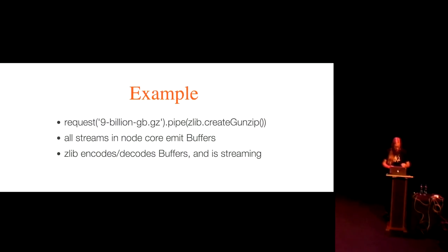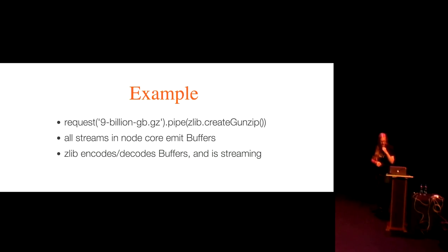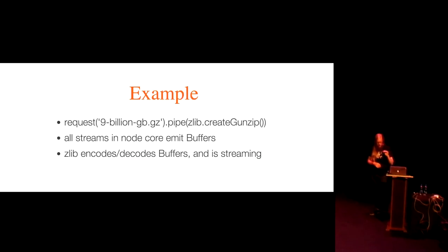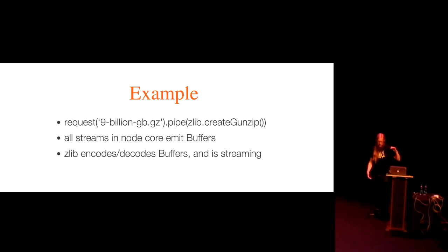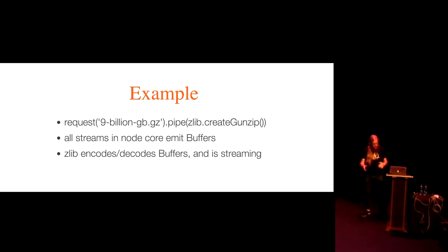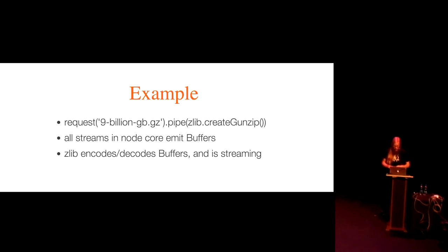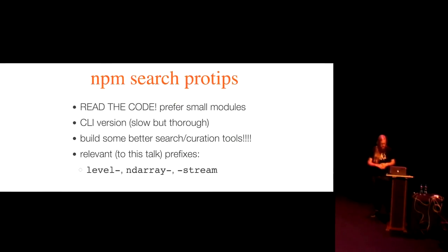If you request a nine billion gigabyte gzipped file and pipe it into Node's zlib library — which is in Node core — you create a gunzip stream. Node will start giving you data right away. As soon as data arrives, it will gunzip the first bit. Gzip is designed to be a streaming protocol. Zlib also works with buffers and tries not to convert to string because that's slow — it un-gzips as fast as possible by not converting between buffers and strings. All streams in Node core emit buffers, so buffers are good and fast, but harder to use.